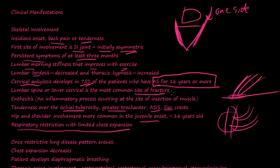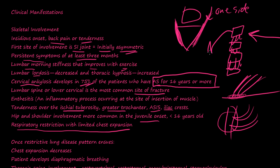Regarding fractures — all these vertebrae are fusing up and there's no motion in the joint. If a big force is applied, the joints normally help absorb that impulse, but with no movement, the bone will just break open. So once fusion happens, you're at a higher risk for fracture. Once a restrictive lung disease pattern develops, chest expansion decreases and the patient develops diaphragmatic breathing — the stomach goes in and out because the diaphragm becomes the only mechanism for oxygen exchange.